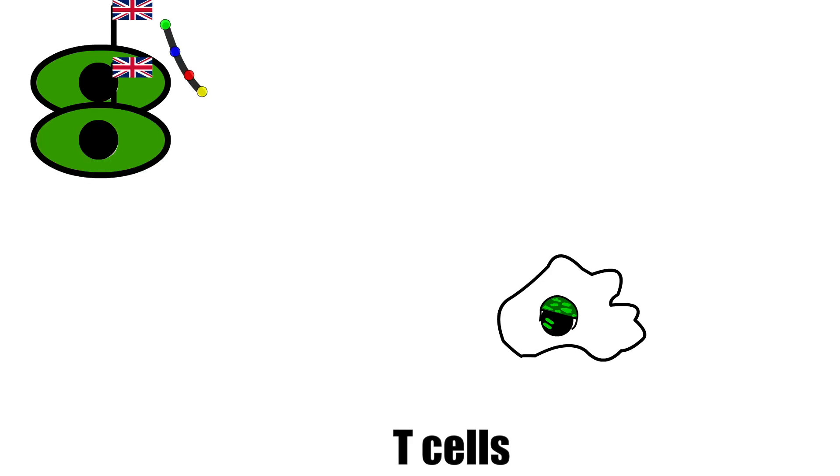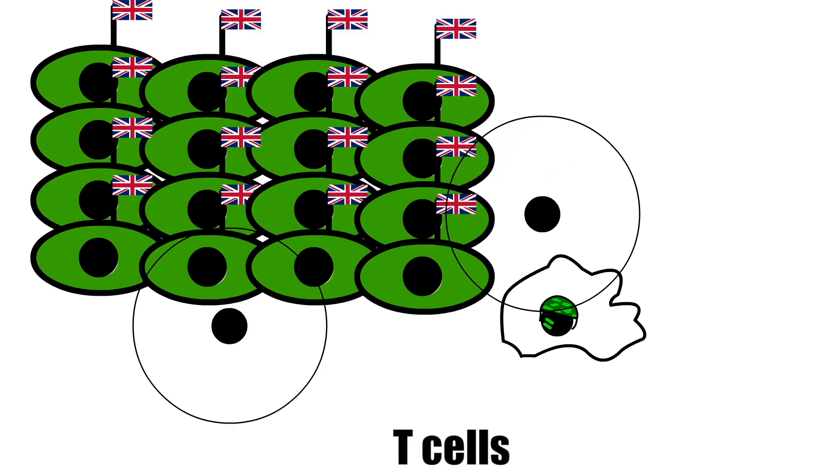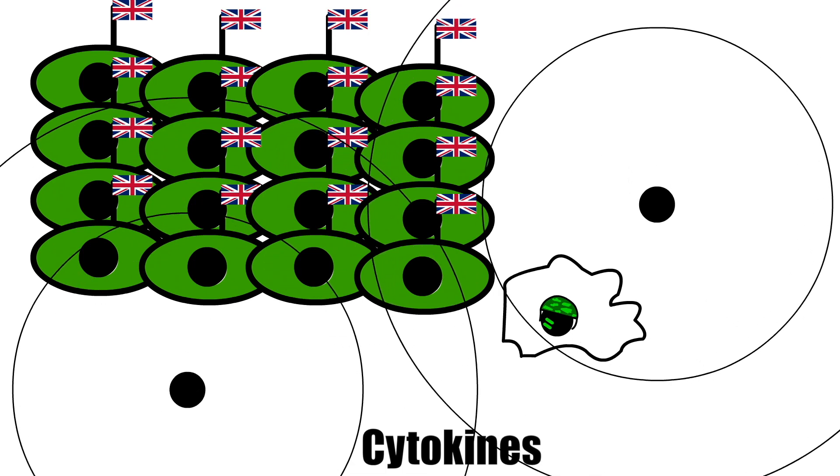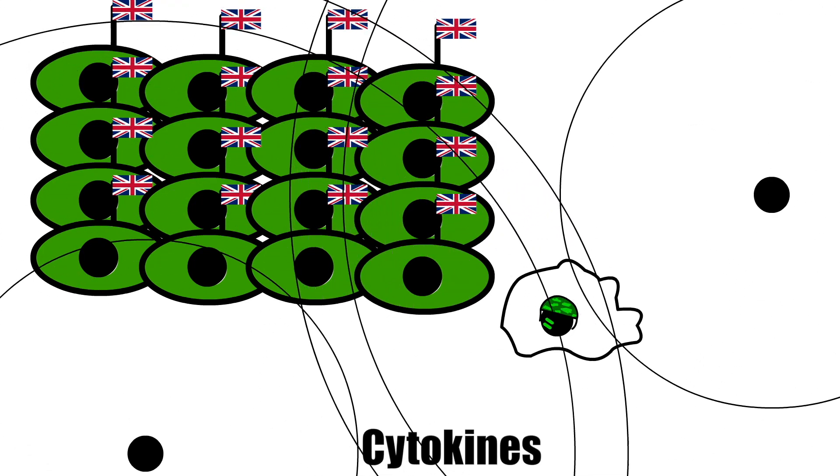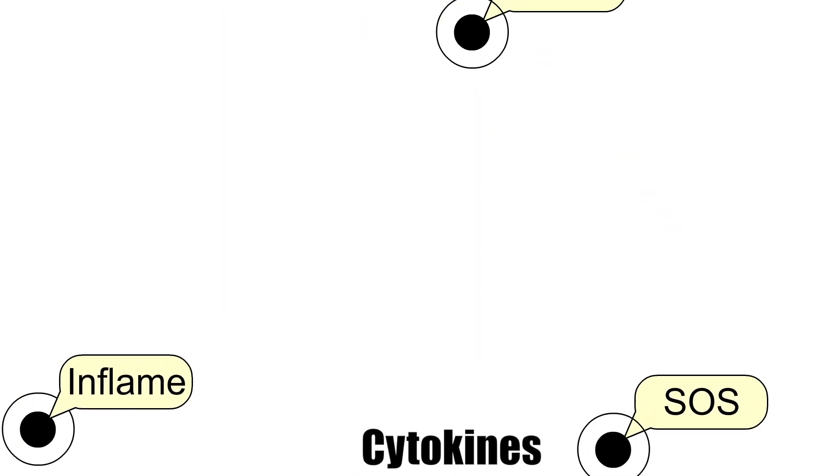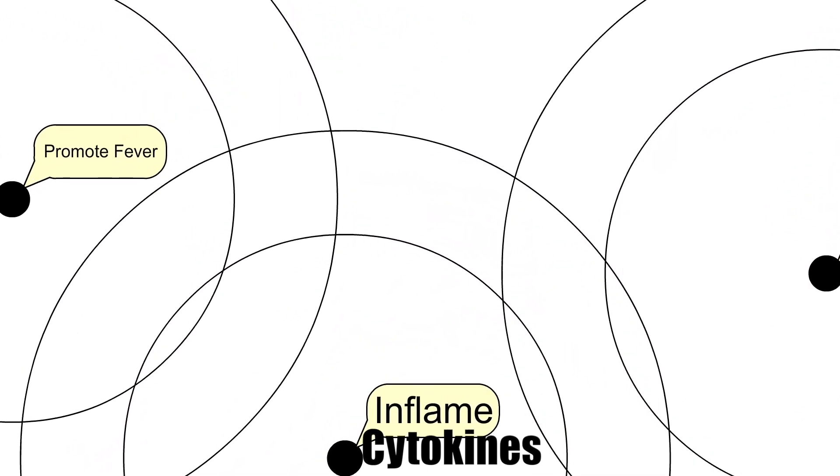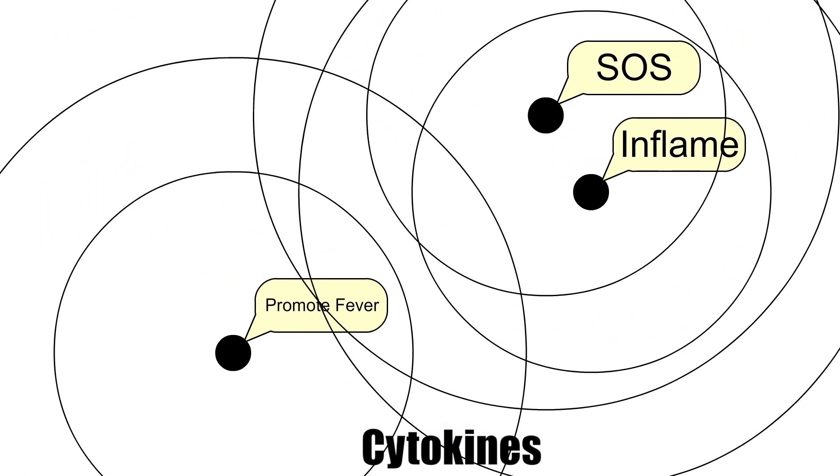But the alveolar macrophages can also send a message through peptides to activate T cells. T cells then divide rapidly and produce cytokines, which tell other cells to do things too. Cytokines can initiate inflammatory responses.